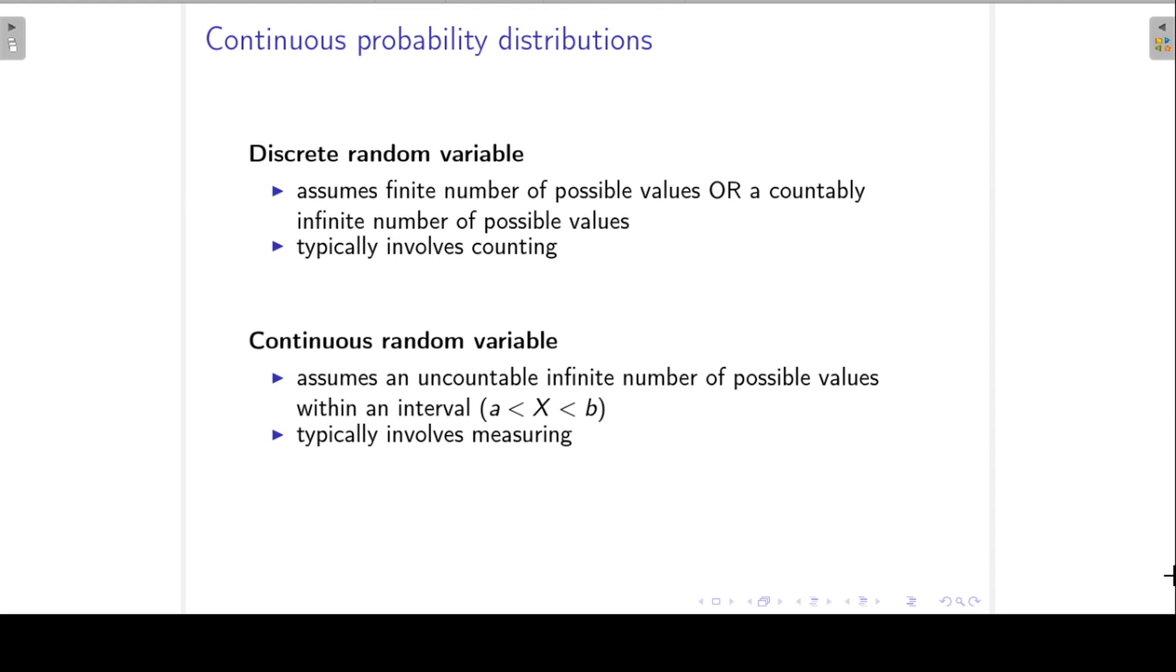For a discrete random variable, it typically involves counting. If you think back to the binomial distribution, for example, we count the number of successes in a fixed number of trials. A continuous random variable typically involves measuring.